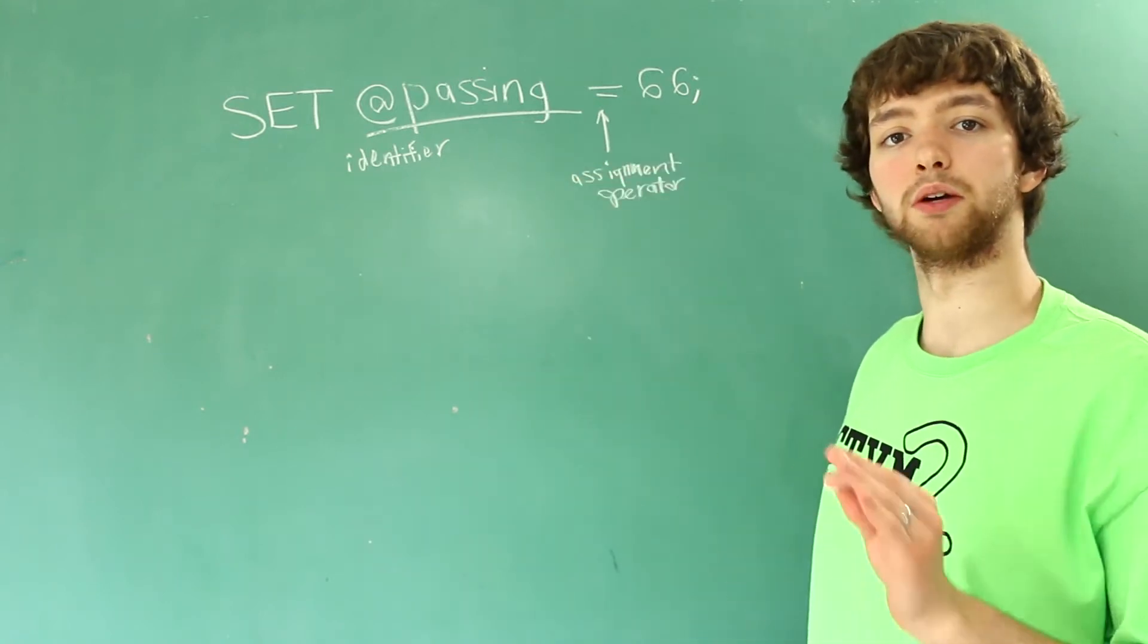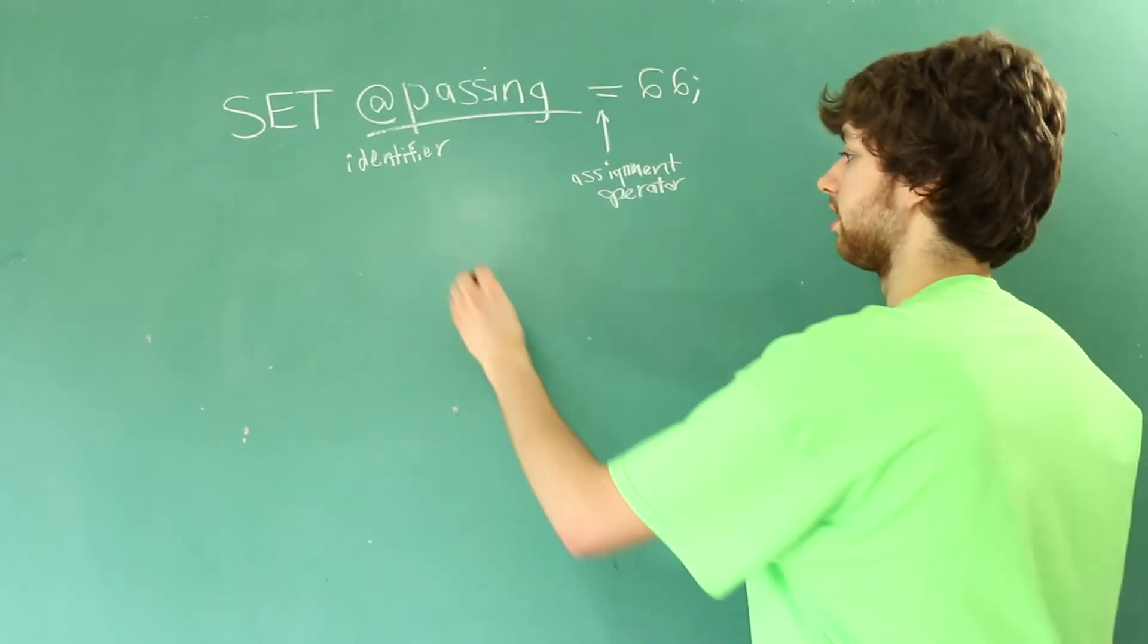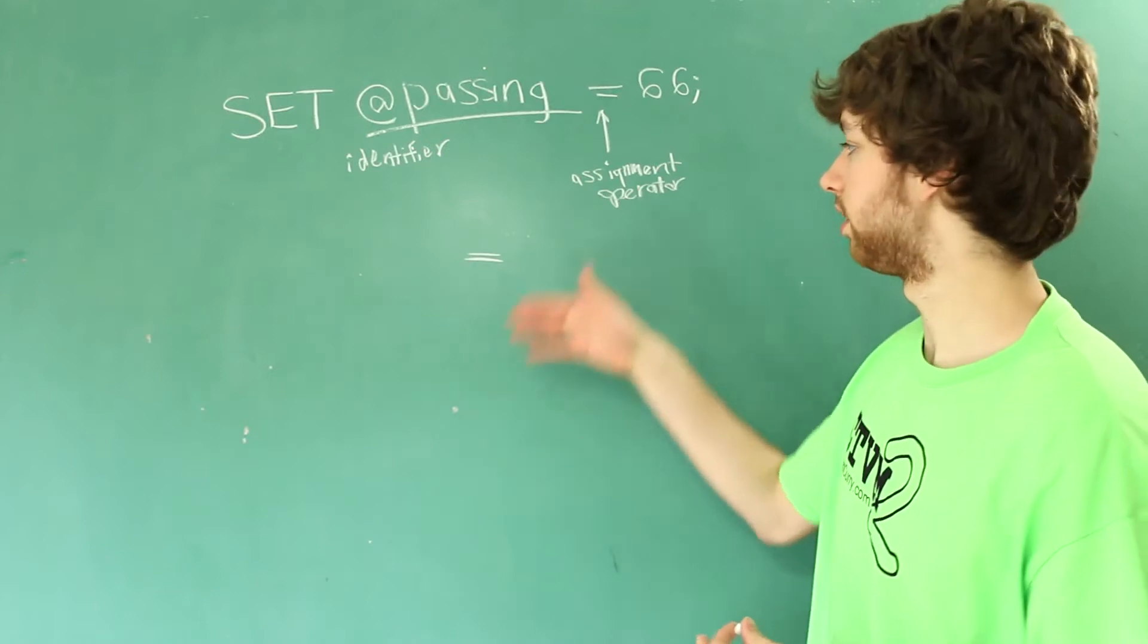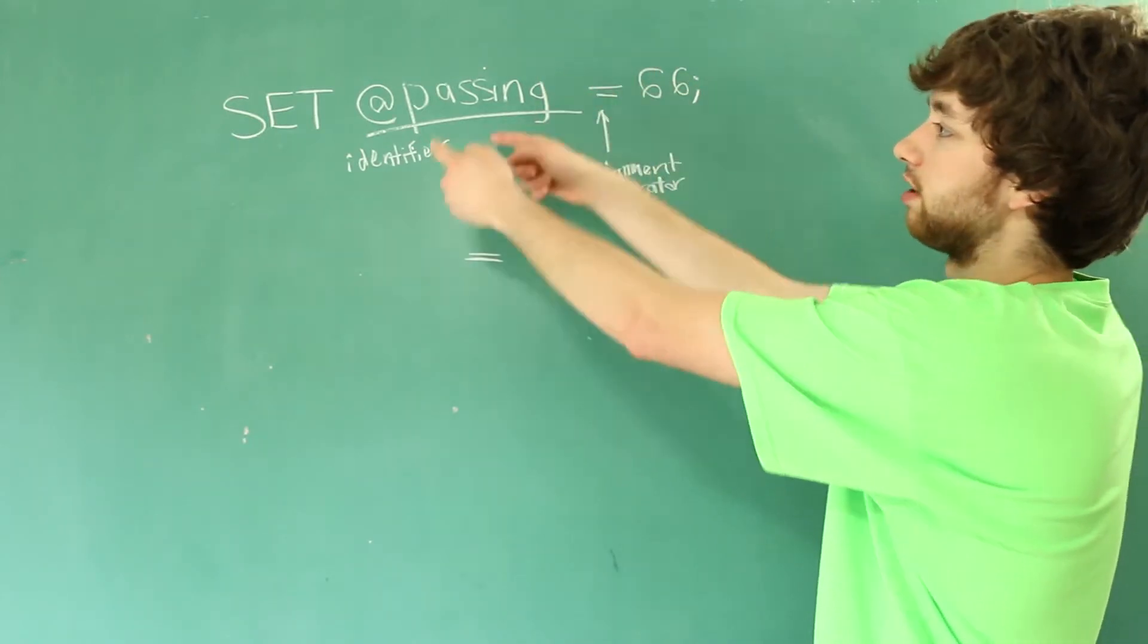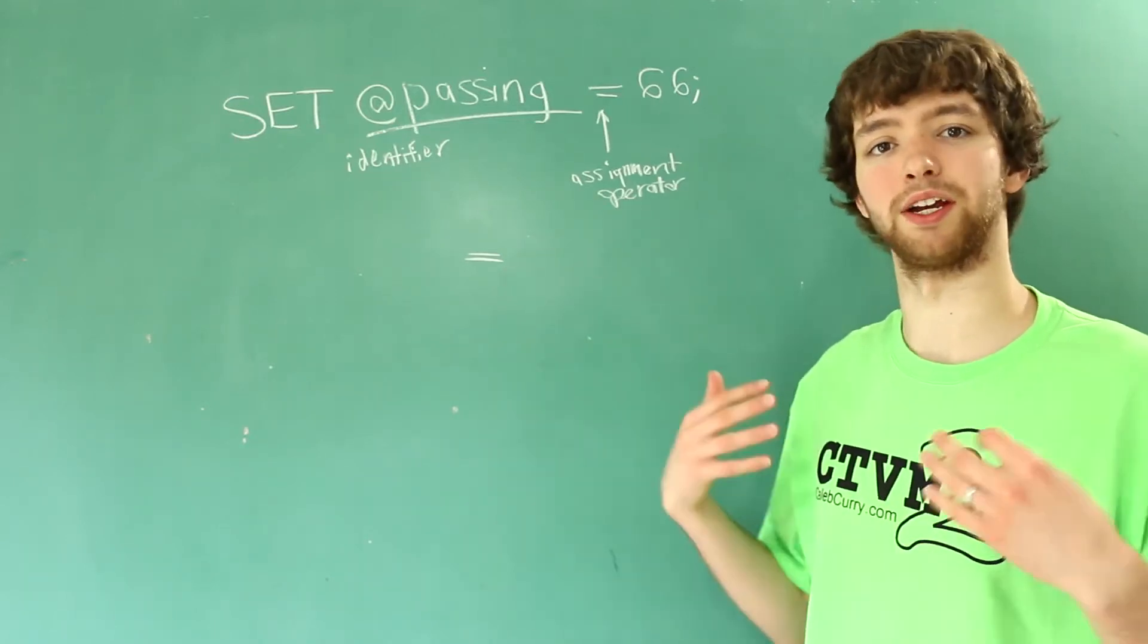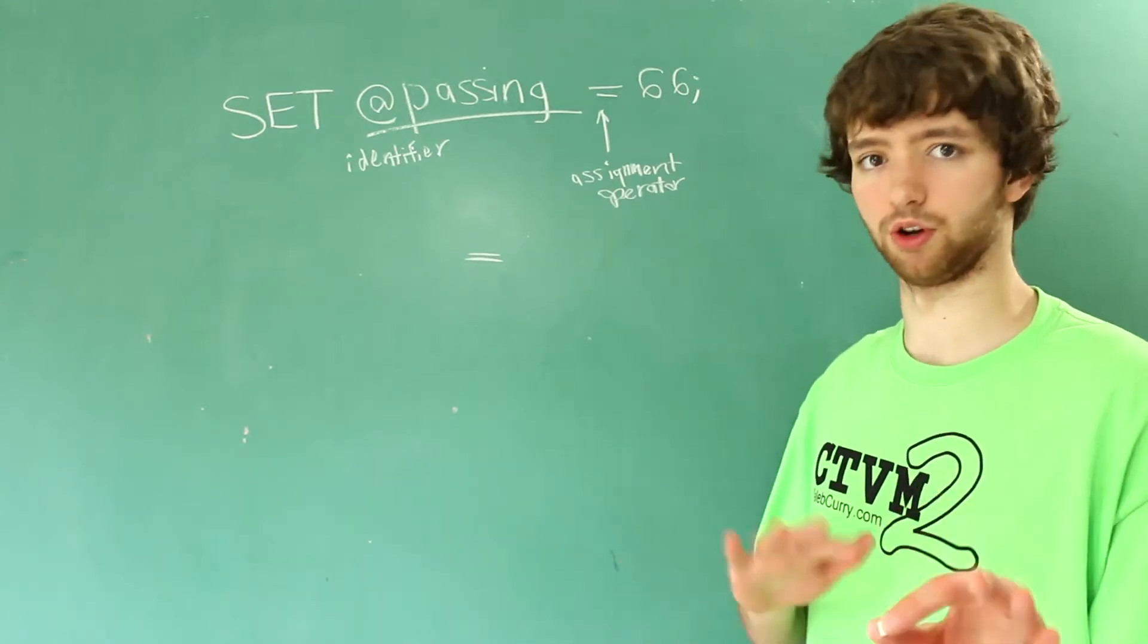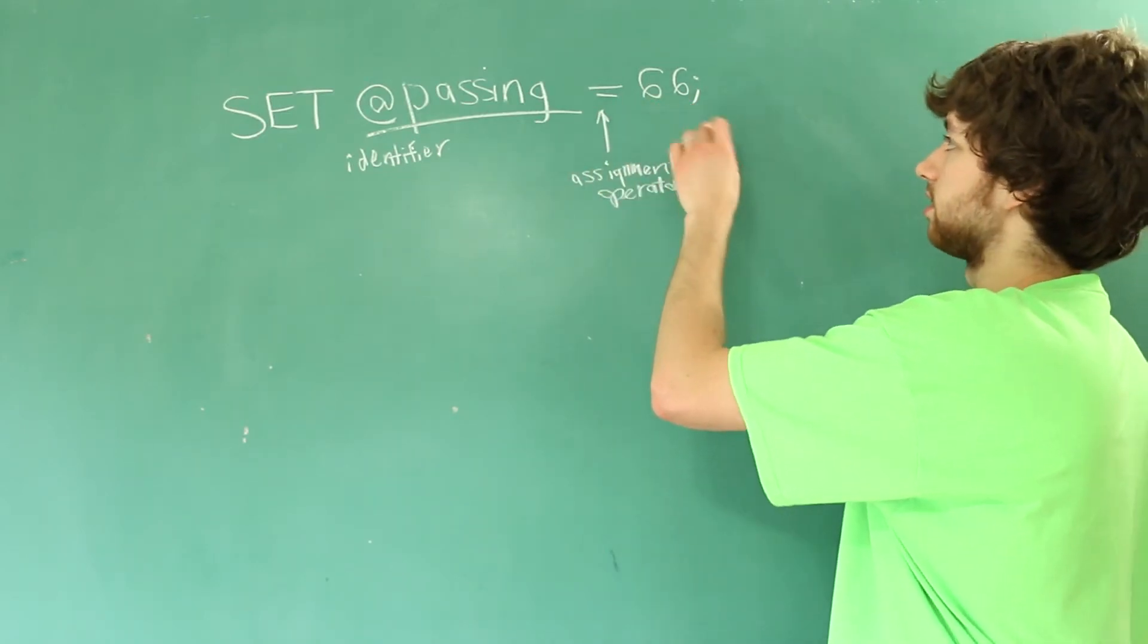In this situation this is the assignment operator, and this can be different than the comparison equals operator which we'll be discussing in just a minute. This is kind of like an overloaded operator - in this situation we're using it to assign a value to a variable, but later we'll see how this can also be used to compare things in a comparison situation. Finally we give it the value 66 and use a semicolon to tell MySQL this is the end of the statement.